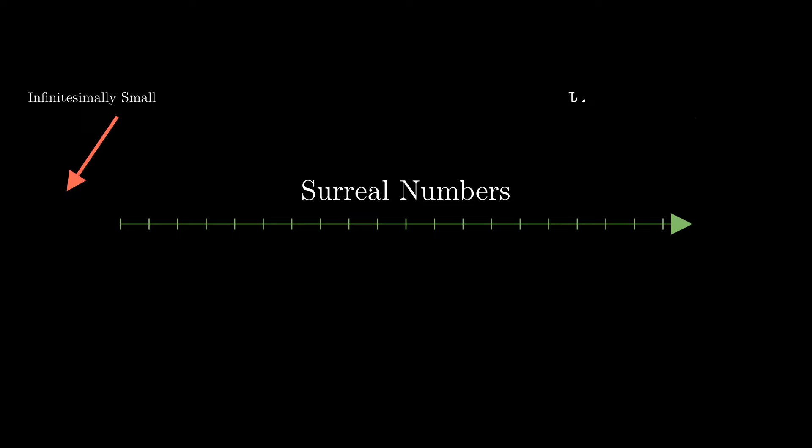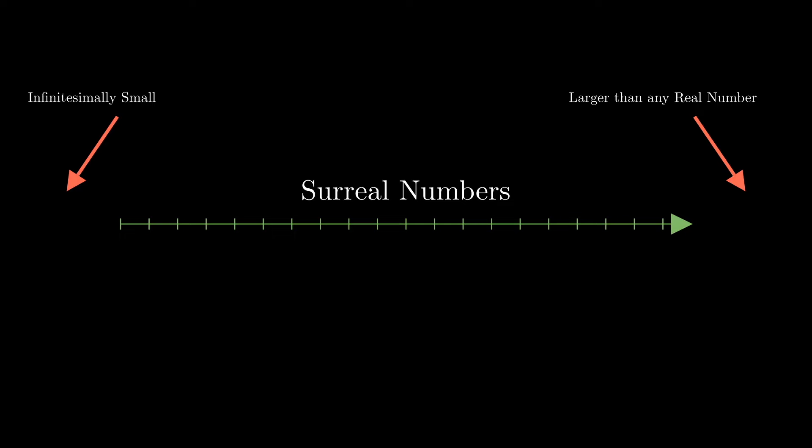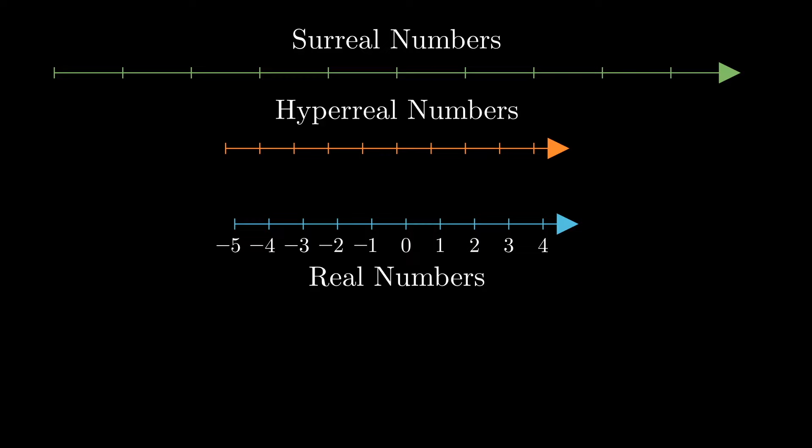including all the real numbers, infinitesimals, and infinite numbers. But what sets surreal numbers apart is their sheer generality. They form a field much like the real numbers, but also contain numbers that are smaller than any positive real number and larger than any real number. This makes them a natural extension of both real and hyperreal numbers.